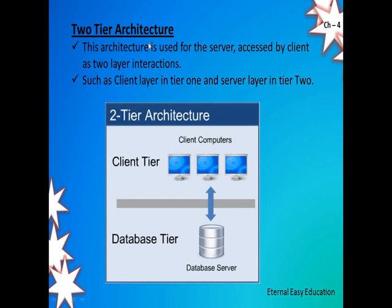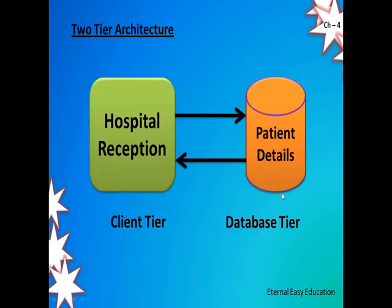What is two-tier architecture? This architecture is used for the server accessed by the client as a two-layer interaction. There is a separation between the client and the database server. Take the example of a multi-specialty hospital. When you enter the hospital, at the reception they collect patient details such as name, age, and phone number, and it is stored in a database. The form where they fill the requirements is the client side or front-end. When they press the save or submit button, all the details are stored in a database software — that is the database tier. So there will be two things of interaction: one is front-end, one is back-end.